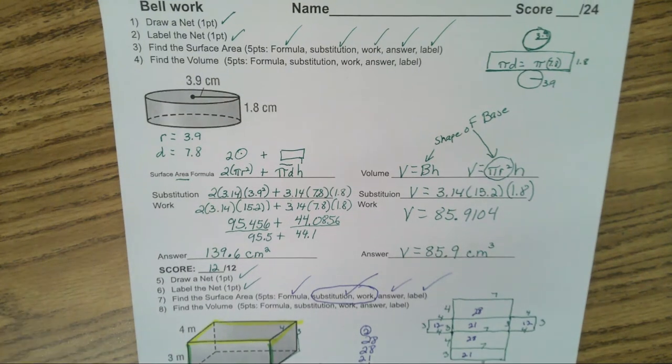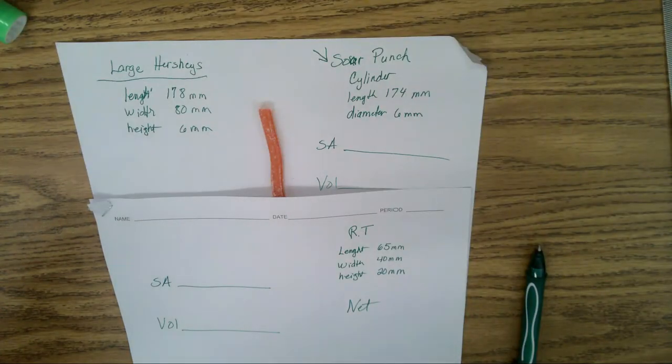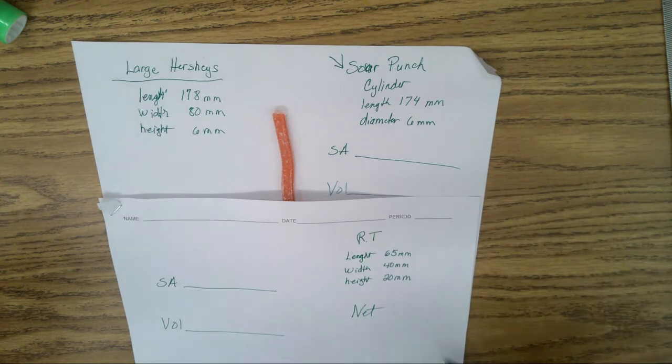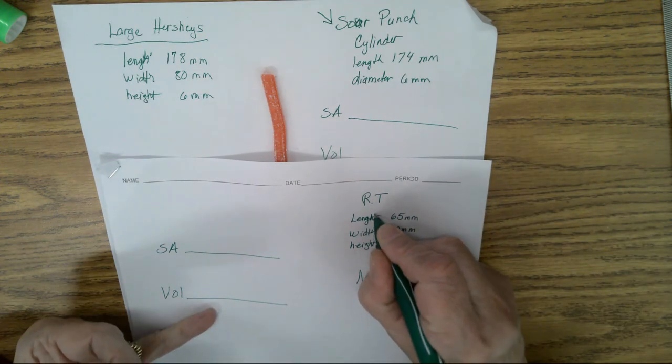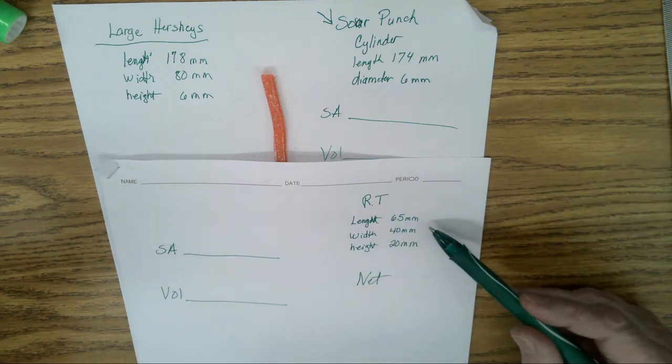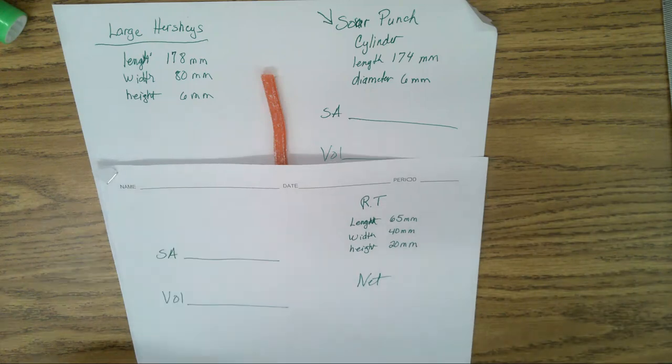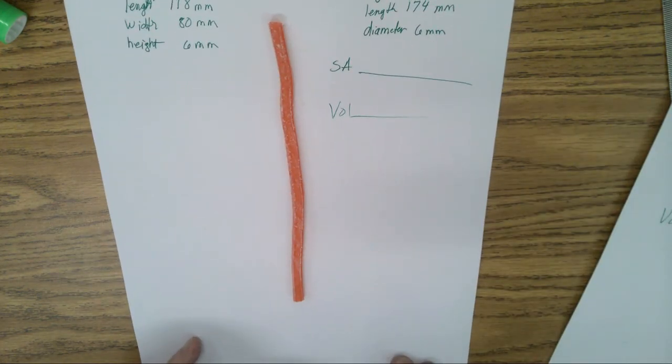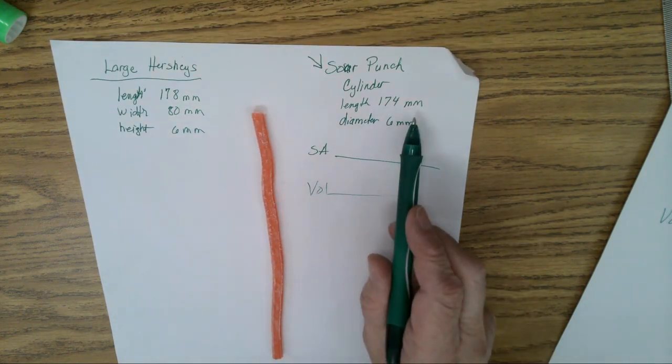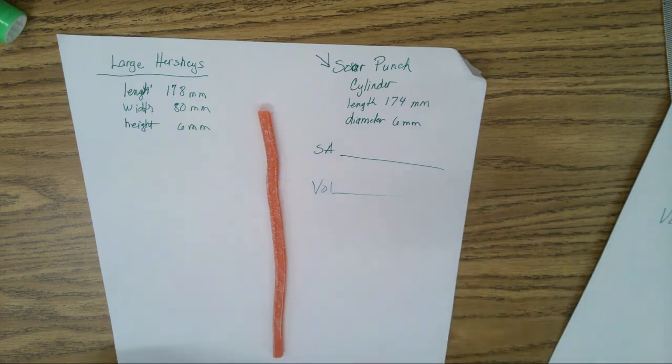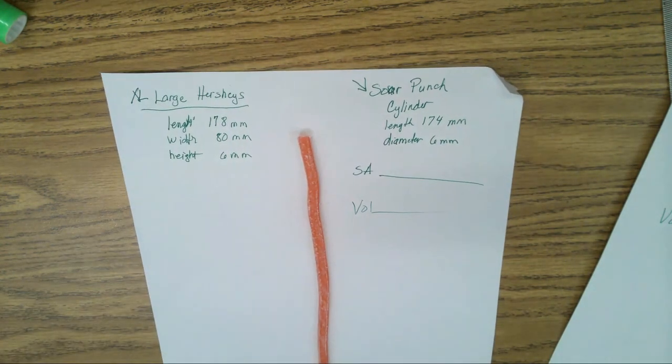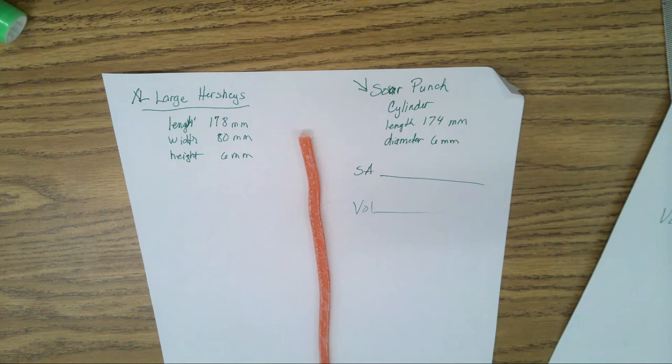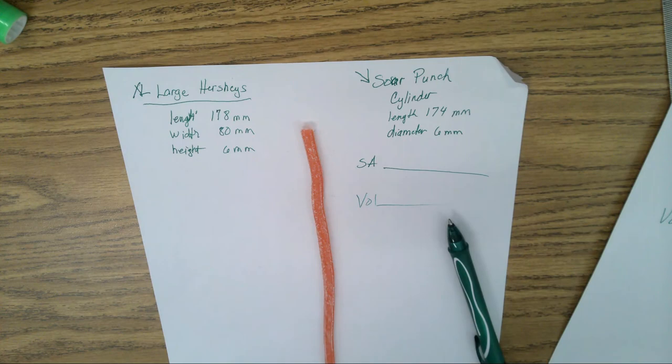Tomorrow we're going to take another one of these and it will be collected for a grade. I probably will give you one where it's a diameter instead of a radius for the circle. Any questions? So, besides finishing the packet, everyone has to do the Rice Krispie Treat, where you find the surface area and the volume. The length is 65 millimeters. Width is 40 millimeters. The height is 20 millimeters. The Sour Punch Cylinder. Find the surface area and volume of it. The length, 174 millimeters. The diameter, 6 millimeters. And the optional bonus is a large Hershey's. And the length is 178 millimeters. The width is 80 millimeters. And the height is 6 millimeters. Have a good day.